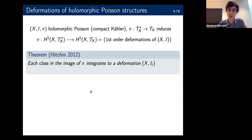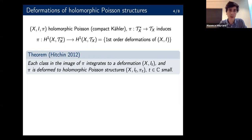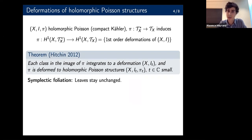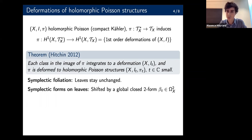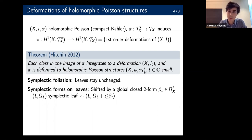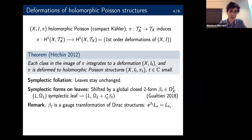Moreover, the Poisson structure pi is deformed along the way to a family of holomorphic Poisson structures for all small complex numbers t near zero. What happens with the symplectic foliation? It's unchanged — the leaves are the same as a foliation of the smooth manifold — but the symplectic forms do get deformed in a very simple way. Namely, there's a global family of closed two-forms beta, depending holomorphically on t, which has the effect of just shifting the symplectic forms. So if you have a symplectic form, it's still a symplectic form in the new holomorphic Poisson structure pi_t, but shifted by the pullback of this global two-form. This beta is interpreted as a gauge transformation of generalized complex structures — citing a paper of Marco Gualtieri — but that's just a side remark.